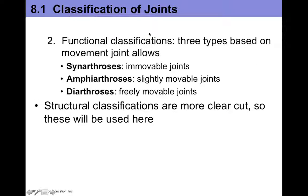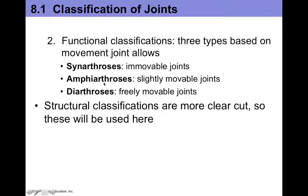The functional classifications refer to the degree of movement. We have synarthroses, which are immovable joints; amphiarthroses, which are slightly movable; and diarthroses, which are freely movable. An example of a synarthrosis would be the cranial sutures — the places where cranial bones meet are synarthrotic because they're immovable. An example of an amphiarthrosis would be the distal tibular-fibular articulation. Diarthrotic joints are freely movable; all synovial joints are diarthrotic, such as your shoulder joint or hip joint.